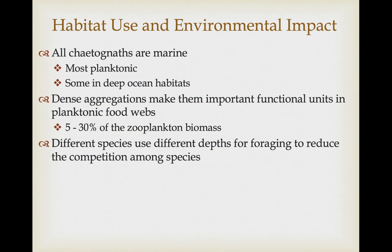All Chaetognaths are marine, mostly found in zooplankton swarms, with a few species restricted to deep ocean habitats. Their dense aggregations make them crucial members of planktonic food communities — about 5% to 30% of a zooplankton sample may be composed of Chaetognath arrowworms. Most make daily migrations up and down the water column — up at night to forage, deeper during the day to escape visually oriented predators. Different species use different depths for foraging, allowing more arrowworm species to coexist without competition.